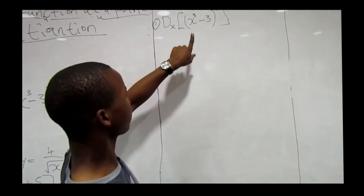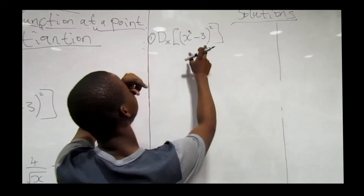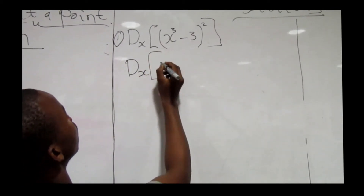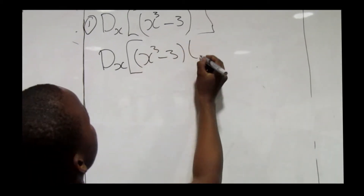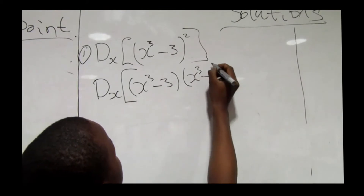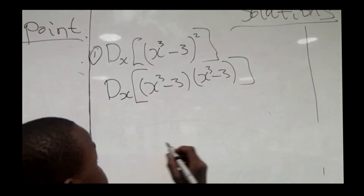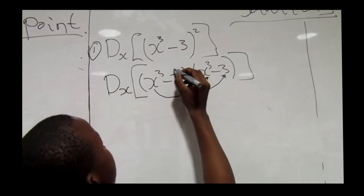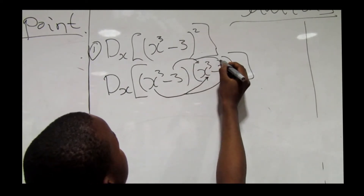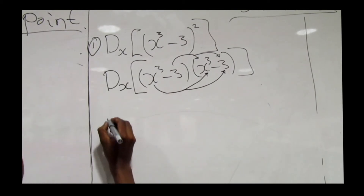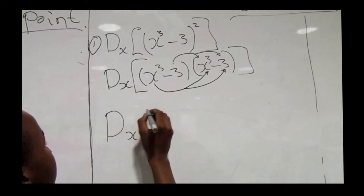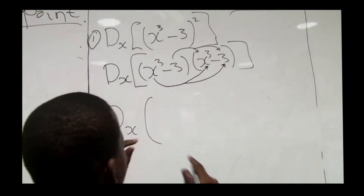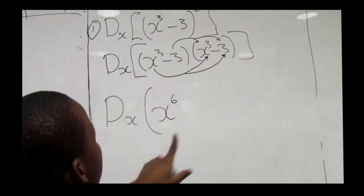The first step is to distribute the inside equation, which gives us d/dx of (x³ - 3)(x³ - 3). We need to multiply accordingly — first term by first term and first term by second term, and so on. Multiplying gives us d/dx of x³ times x³, which equals x to the power 6.